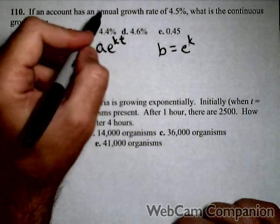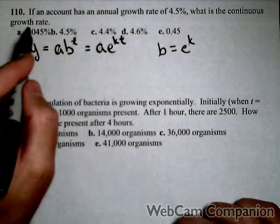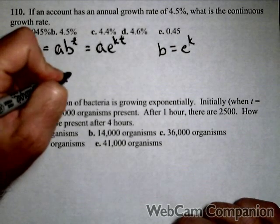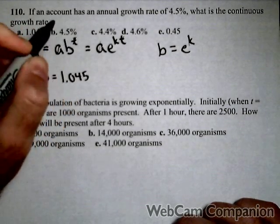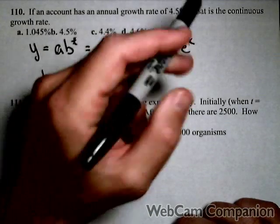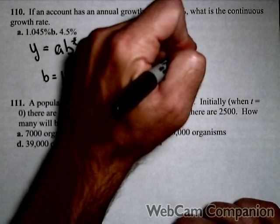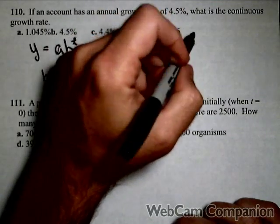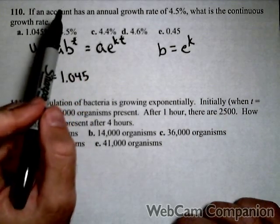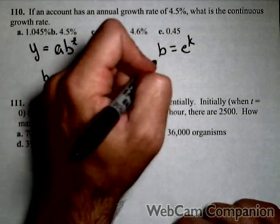Now because I'm given an annual growth rate of 4.5%, I know that my growth factor is 1.045. We just add one to it. If I were given a continuous rate of 4.5%, I would put 0.045 in for K, calculate E to the 0.045, and I could get my growth factor, subtract one, to get my annual growth rate. We're going the other direction.